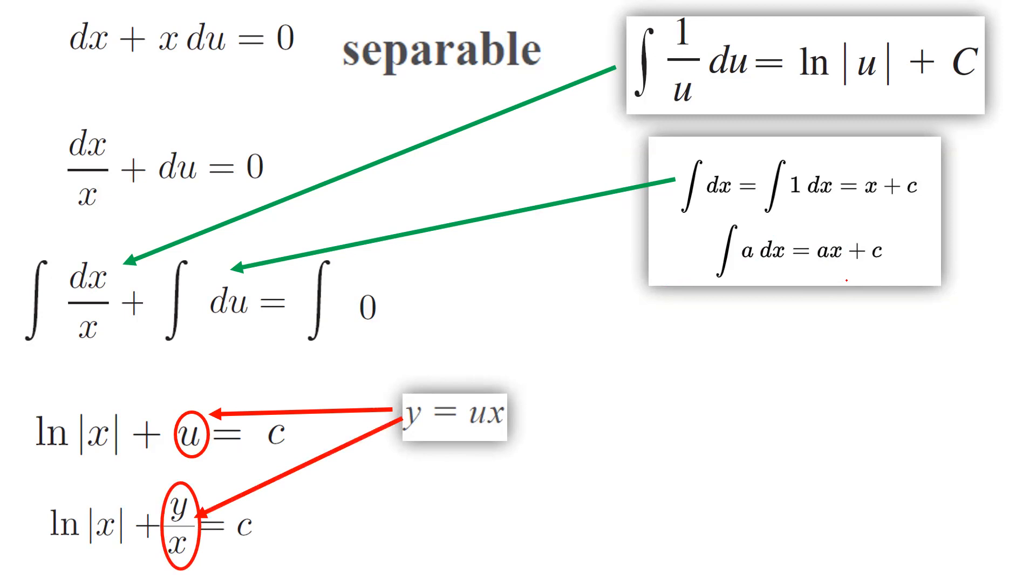You can multiply everything by x. You end up with x ln|x| + y = cx. You might bring x ln|x| to the other side, and y becomes cx - x ln|x|.